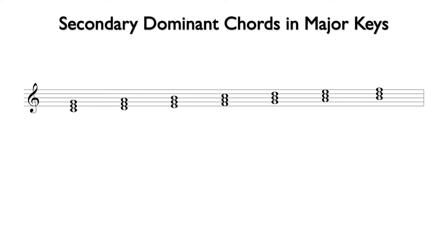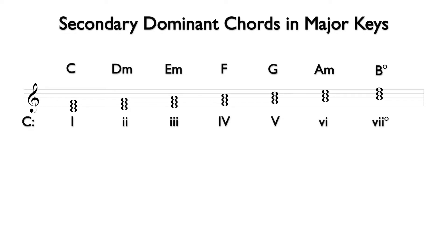Here we have the diatonic triads in the key of C major. The chords are named and receive the following Roman numeral analysis. We will notate the dominant chords that lead to each of these diatonic triads. The primary dominant chord, as a triad, will be G major, but it could also include the addition of the minor seventh, making it a dominant seventh chord. Since the primary dominant can be a triad or a seventh chord, I will put the seventh in parentheses.